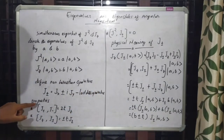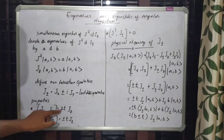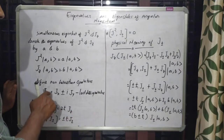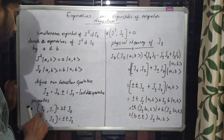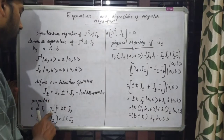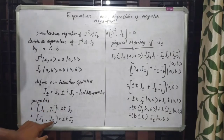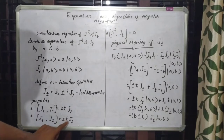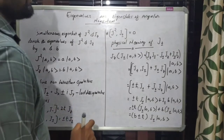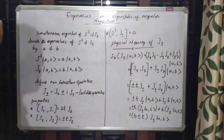To get the allowed values of eigenvalues a and b, we define two non-Hermitian ladder operators: J+ = Jx + iJy and J− = Jx − iJy. The three properties of these ladder operators are: first, [J+, J−] = 2ℏJz; second, [Jz, J±] = ±ℏJ±; and third, [J², J±] = 0.